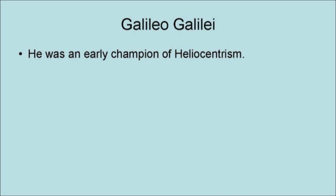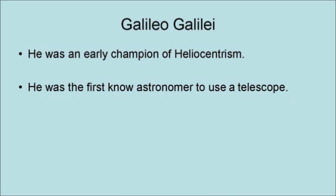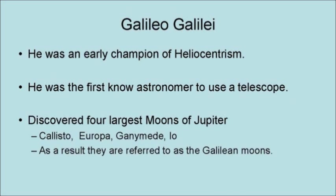Galileo was an early champion of heliocentrism. He was the first known astronomer to use a telescope. As a result, he discovered the four largest moons of Jupiter: Callisto, Europa, Ganymede, and Io. Hence, they are referred to as the Galilean moons.